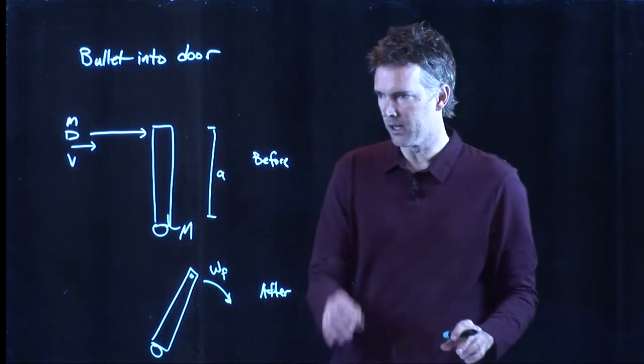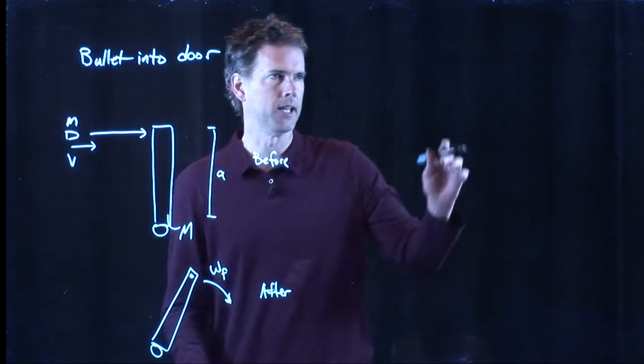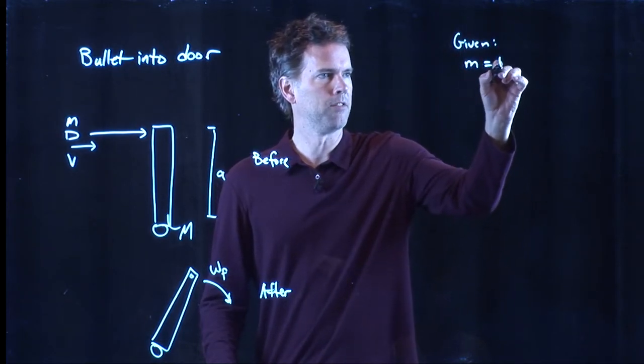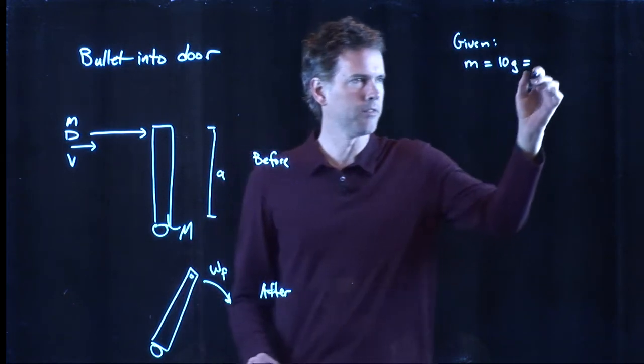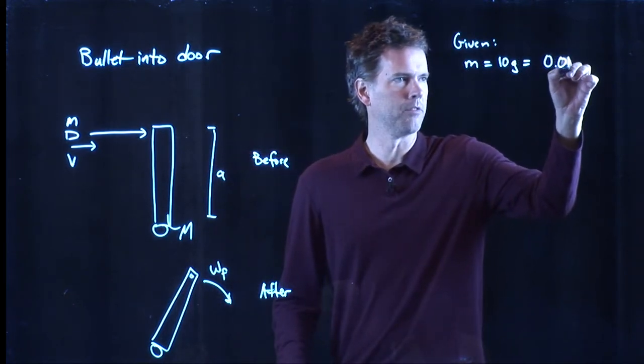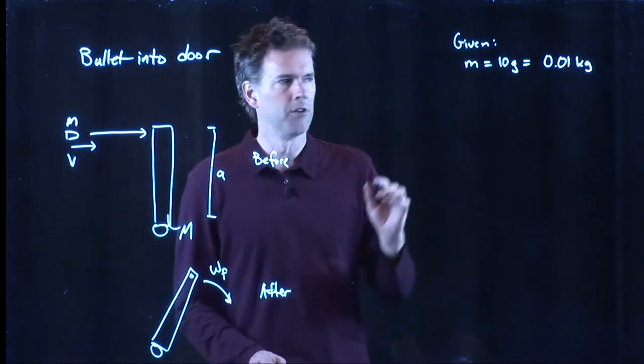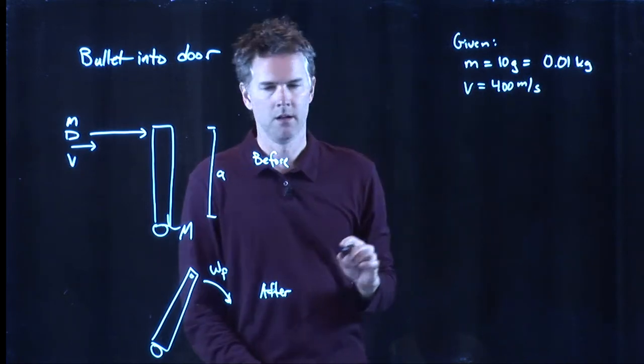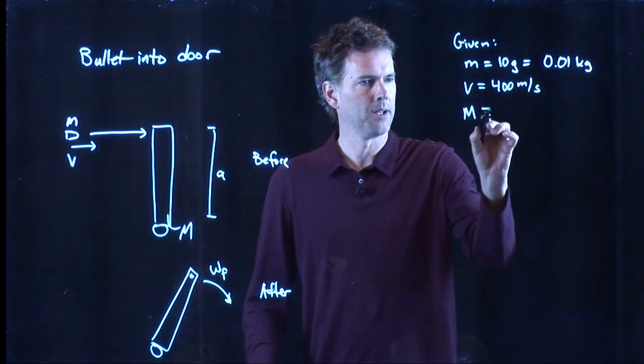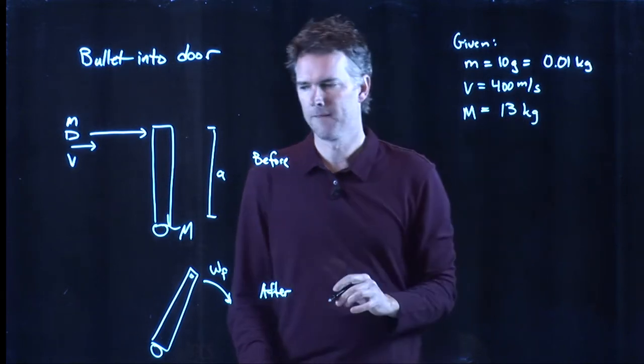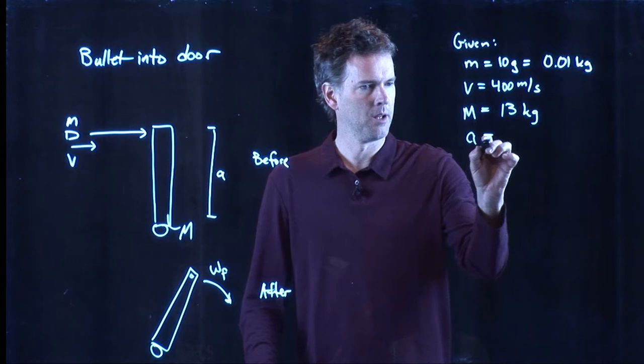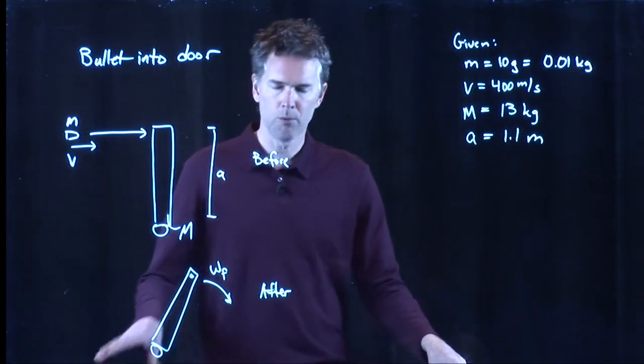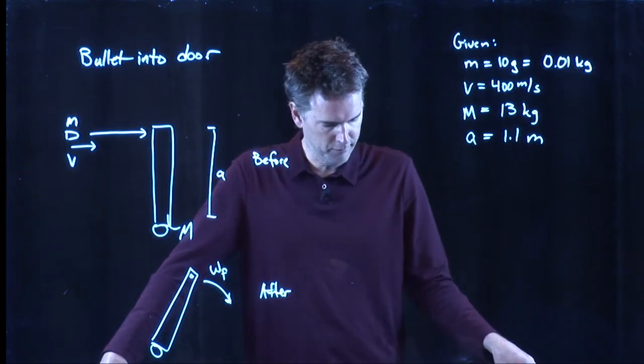And let's give you some real numbers because we're going to plug these in at the end. So the data that we have is the following: mass of the bullet is 10 grams, in SI units that is 0.01 kg. The speed of the bullet is 400 meters per second. The mass of the door capital M is 13 kg. And the width of the door is 1.1 meters.